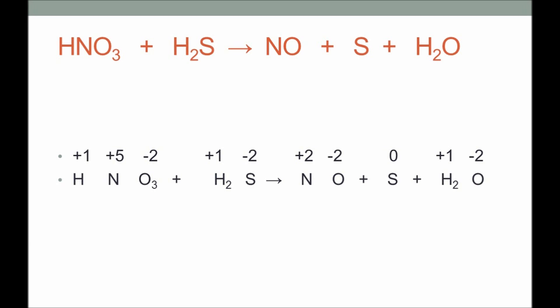On the product side, nitrogen has an oxidation number of +2, and oxygen is again −2. Sulfur here has an oxidation number of 0. Hydrogen and oxygen in water are +1 and −2, respectively.